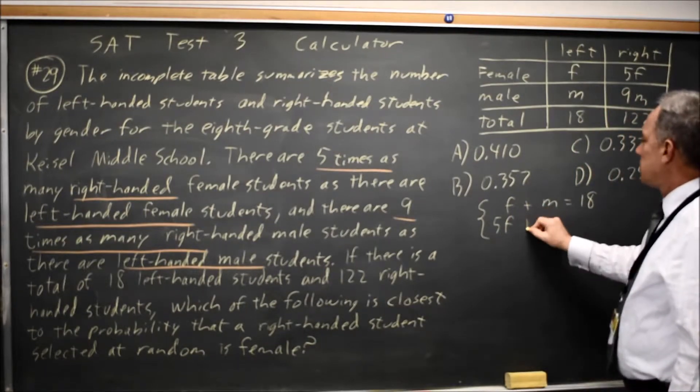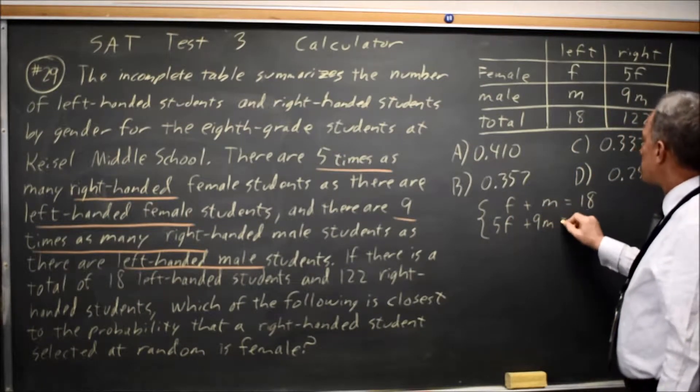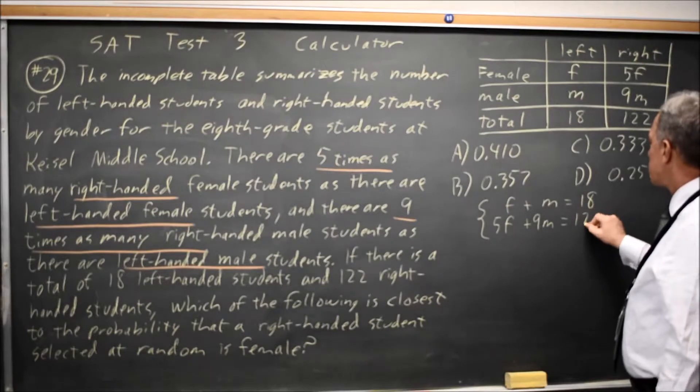And the number of right is 5F, my number of right-handed females, 9M is my number of right-handed males, equals 122.